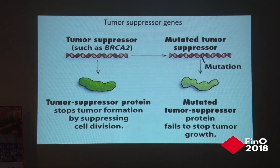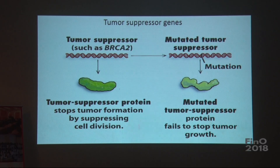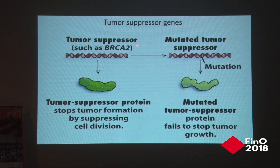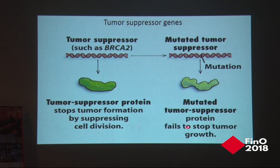Tumor suppressor genes, under normal conditions, ensure that cells do not become cancerous. P53, for example, is the protein that leads to apoptosis if it detects an oncogenic signal or DNA mutation in a cell. Once it detects something wrong, it gets activated and leads to death of that cell so that no bad cell in the body can lead to potential cancer. Similarly, BRCA2 is a protein that helps stop tumor formation by suppressing cell division at checkpoints and ensuring everything is as it should be.